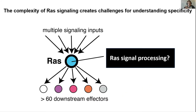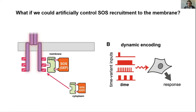At this point you've learned a lot about RAS, but the complexity of RAS signaling and the differences across different cell types really creates challenges for understanding specificity. We've got all these different things that can activate RAS, and all these different things that it can communicate to. We understand the basic logic of how RAS works, but we don't fully understand the signal processing that's going on. An emerging hypothesis in the field is that different patterns or dynamic types of stimulation or activation of RAS can produce different outcomes or decisions by cells.